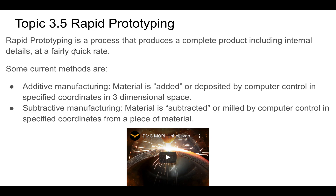So that's rapid prototyping. There are sort of two current methods. The types of rapid prototyping fall within additive or subtractive manufacturing. That's not to say that there won't be different types in the future. At this point, these are the main two that you should know. Additive means that you are adding or depositing material by some sort of computer control in some sort of specified space.